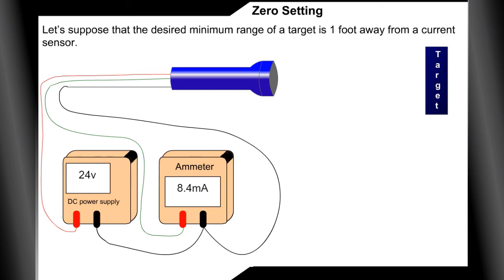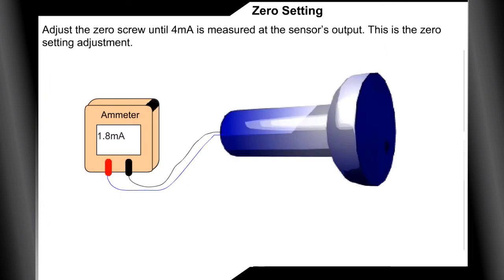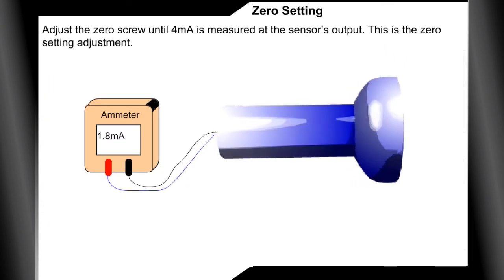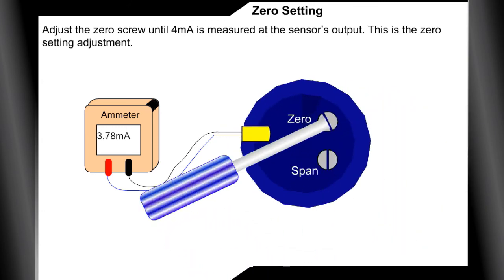Let's suppose that the desired minimum range of a target is 1 foot away from a current sensor. Adjust the zero screw until 4 milliamps is measured at the sensor's output. This is the zero setting adjustment.